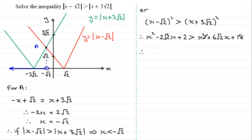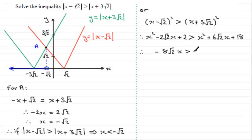Subtracting x squared from both sides eliminates it. Taking 6 root 2 x from both sides: minus 2 root 2 x minus 6 root 2 x gives minus 8 root 2 x. Subtracting 2 from both sides: 18 minus 2 gives 16. So we have minus 8 root 2 x is greater than 16.